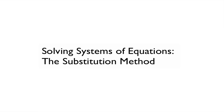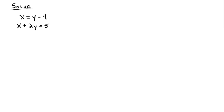This will be the second method in solving systems of equations — it's called the substitution method. Here's our system, and you get this name because we're literally going to substitute. From this first equation we see that x and y minus 4 are the same thing: x equals y minus 4.